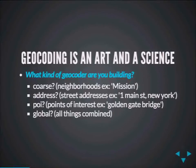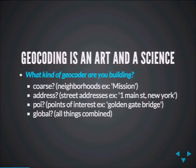Then there is the global gazetteer, which is all things combined. This is where things get complicated because it's not only big data, but it also combines different ways of solving. There's different search logic for coarse, address, and POI, but for a global geocoder you need an intermediary layer to figure out whether the search query is a street address, a neighborhood, or a country, and then rank results accordingly.